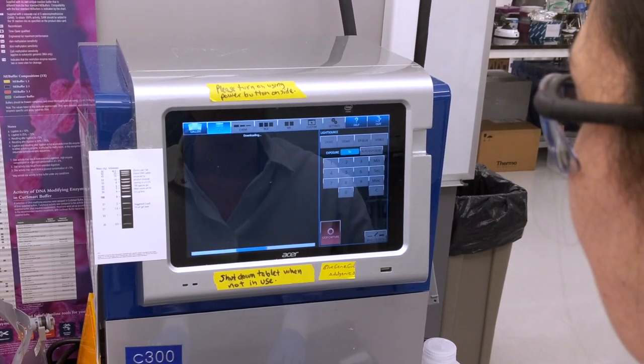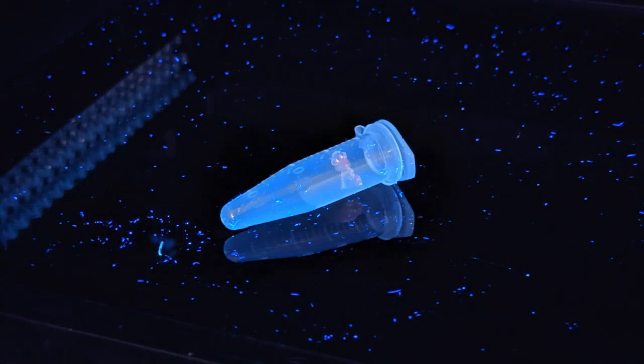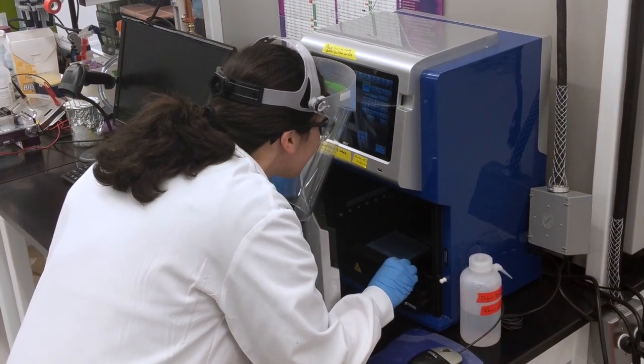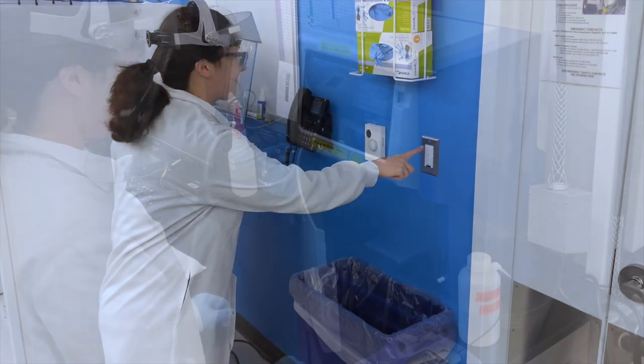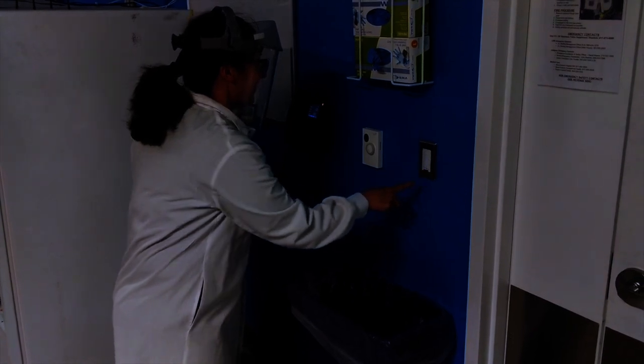The gel we used contains ethidium bromide, a stain that binds to DNA and causes it to fluoresce under the UV light emitted by the gel imager. Pull the tray out slightly to prepare to cut the bands. If the bands are not easily visible, try blocking out surrounding light by closing the shades or turning off the lights.